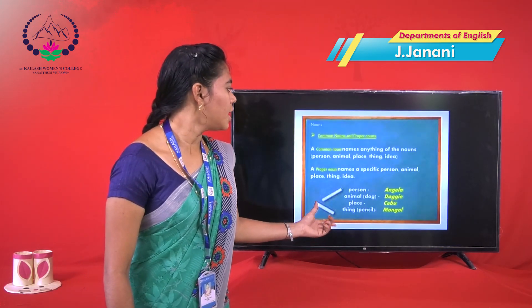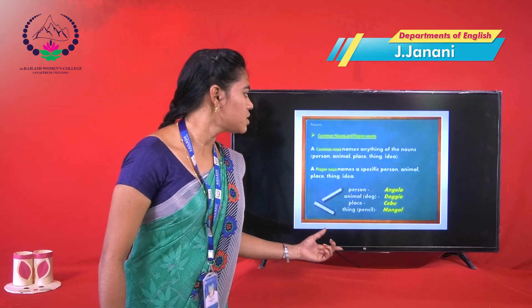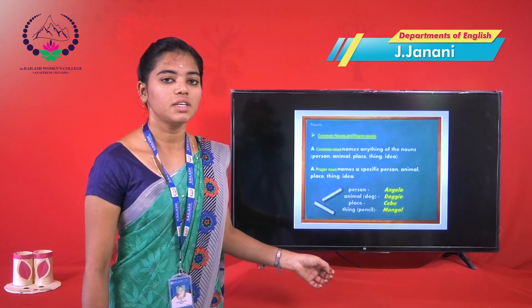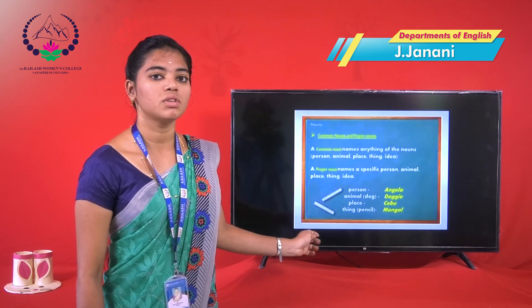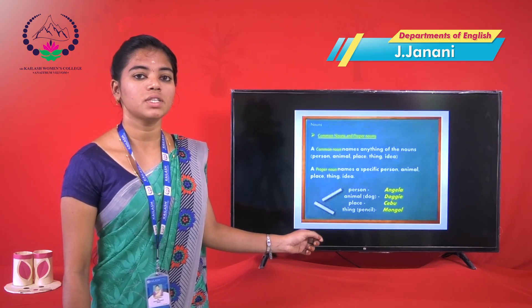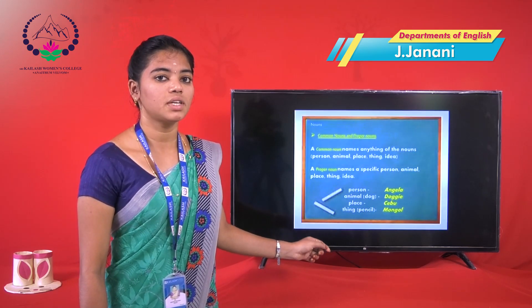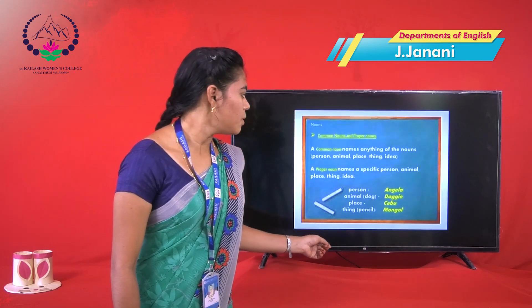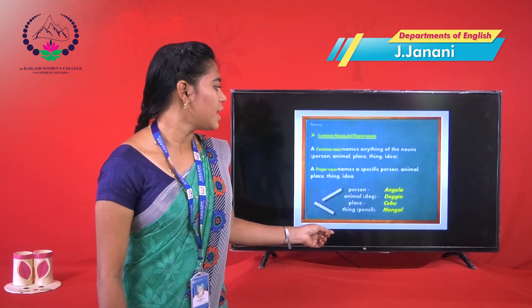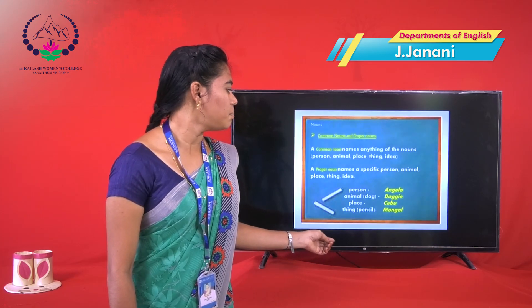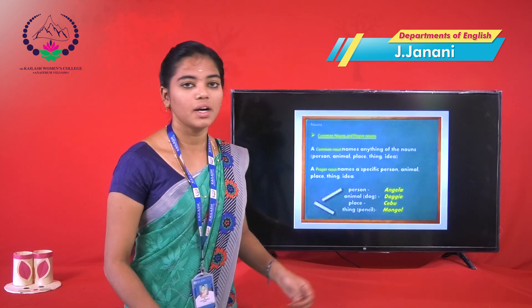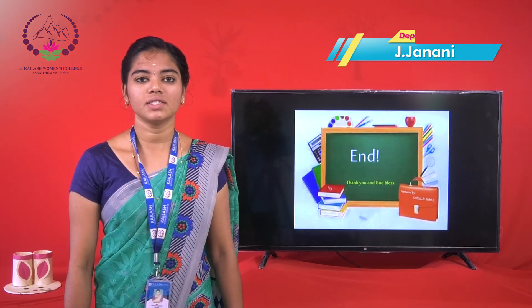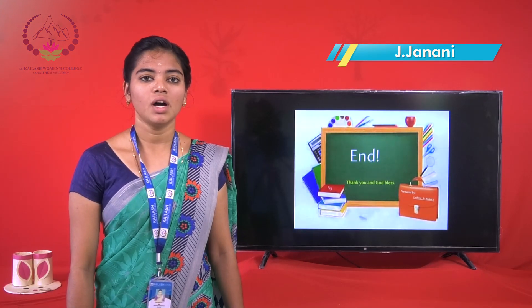Again, common and proper noun. Common noun means any general person, animal, place, or thing. Proper noun refers to a particular person or entity. For example: person — Angel, animal — Doggy, place — Zebra, things — Mangal. It is called a proper noun. This concludes our discussion about noun and its types.